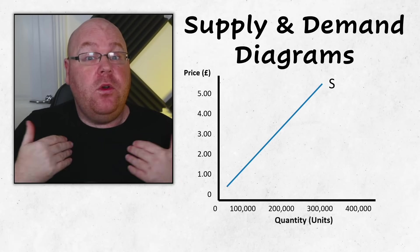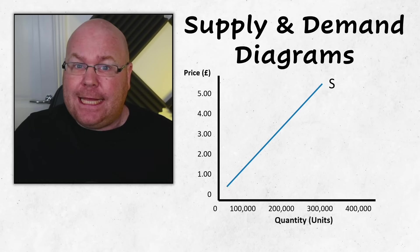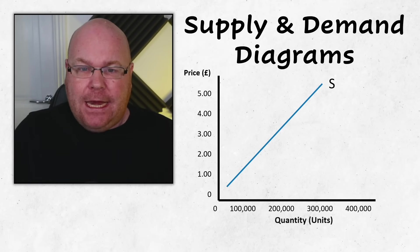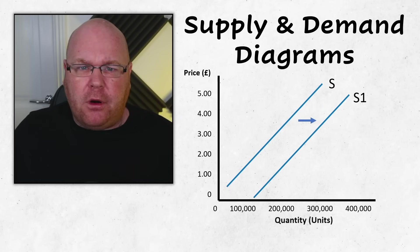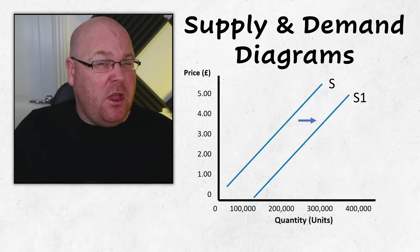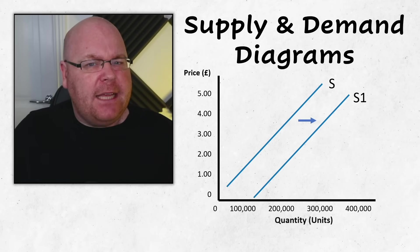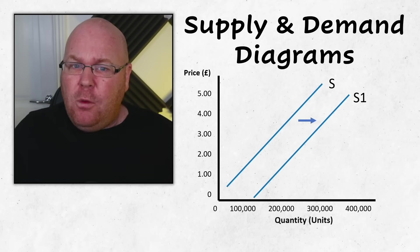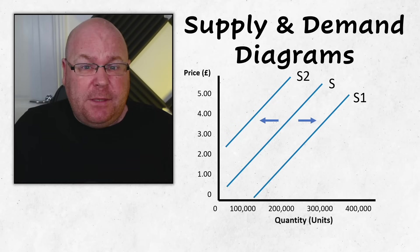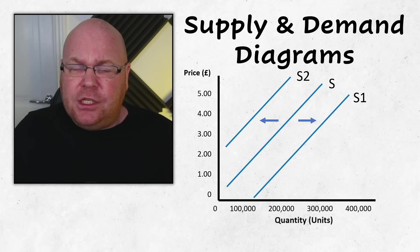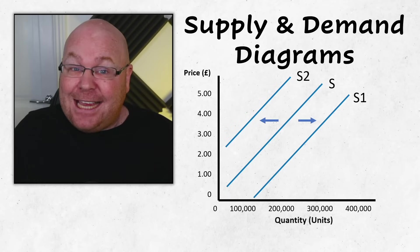Just as we could be asked to illustrate shifts in the demand curve, we could be required to do the same with the supply curve. It can shift to the right or outwards, and it can shift inwards or to the left. A shift outwards means something has happened in the marketplace so that suppliers are more willing to produce that product at a particular price. A shift inwards means that even though the price hasn't changed, another scenario has occurred which means suppliers are now less willing to produce it.